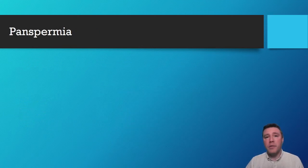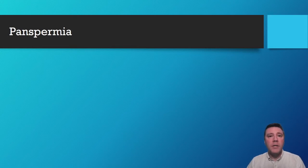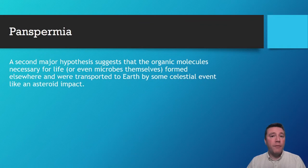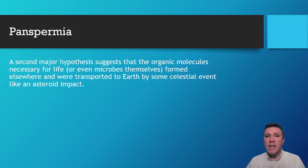A second hypothesis, called panspermia, suggests that organic molecules weren't formed here on Earth, but in fact were formed elsewhere and then transported to Earth via something like an asteroid impact. There is evidence to support this hypothesis as well.